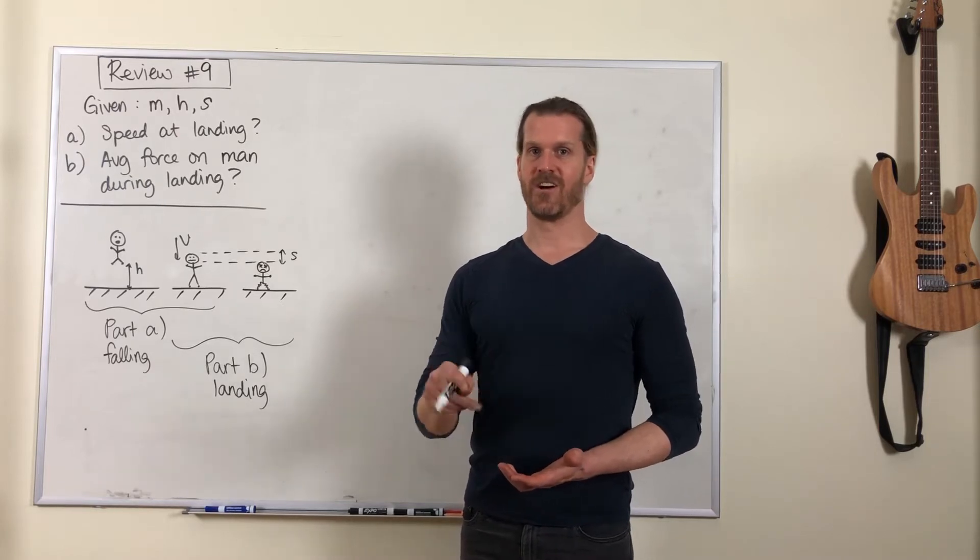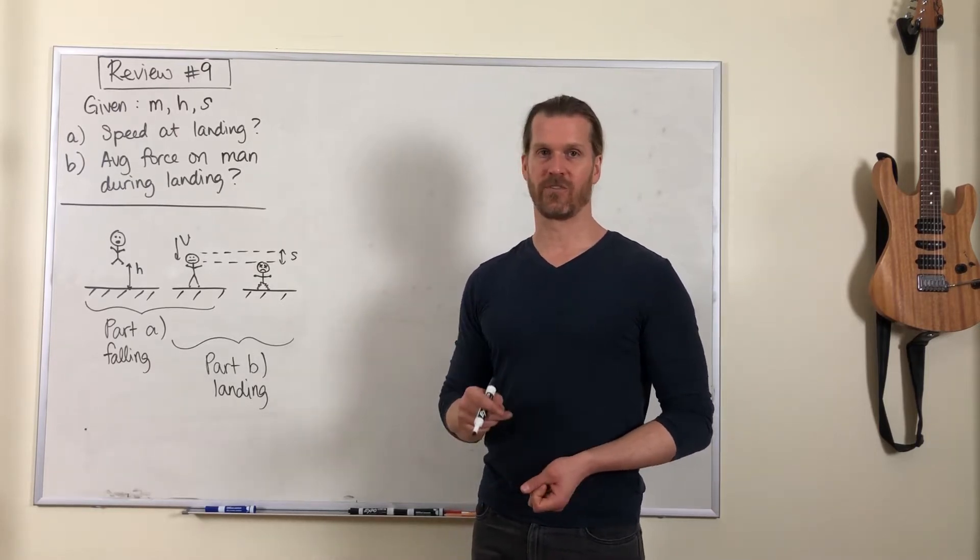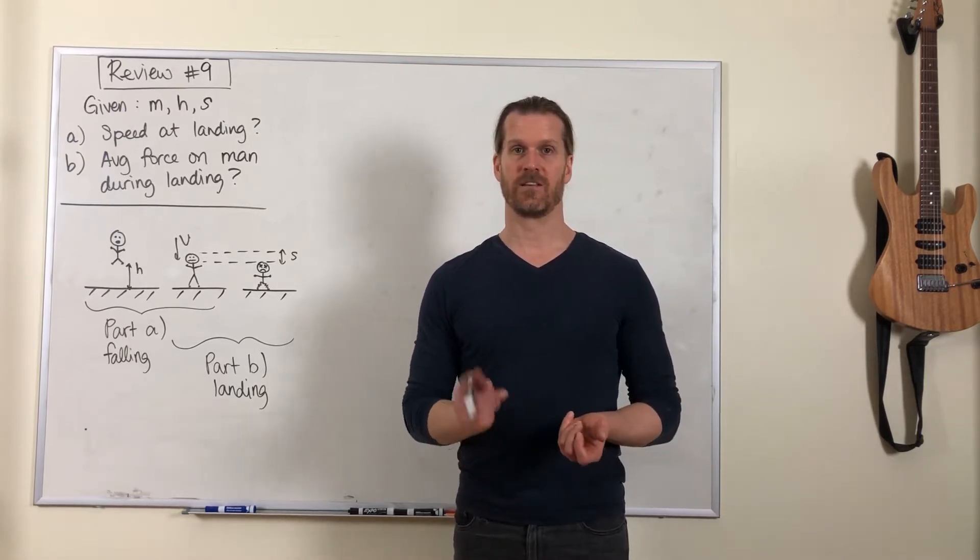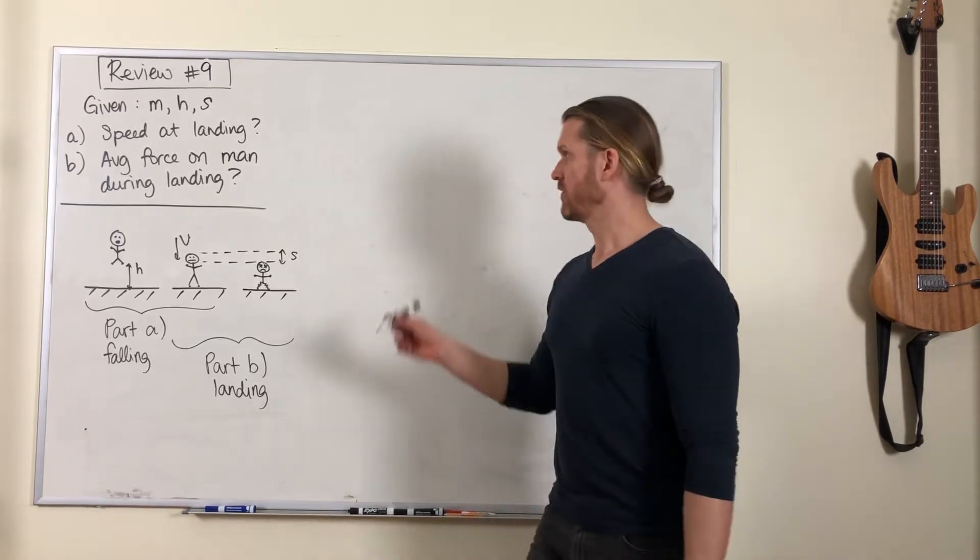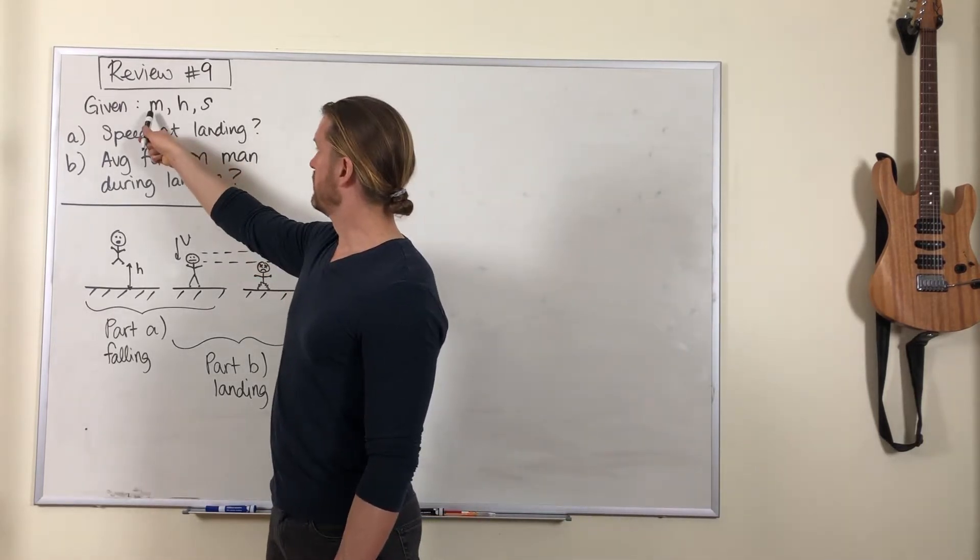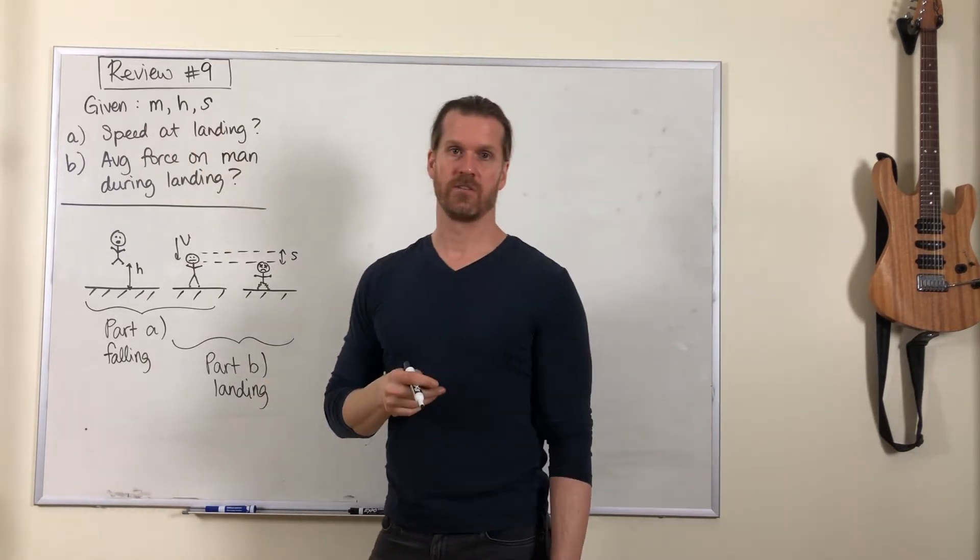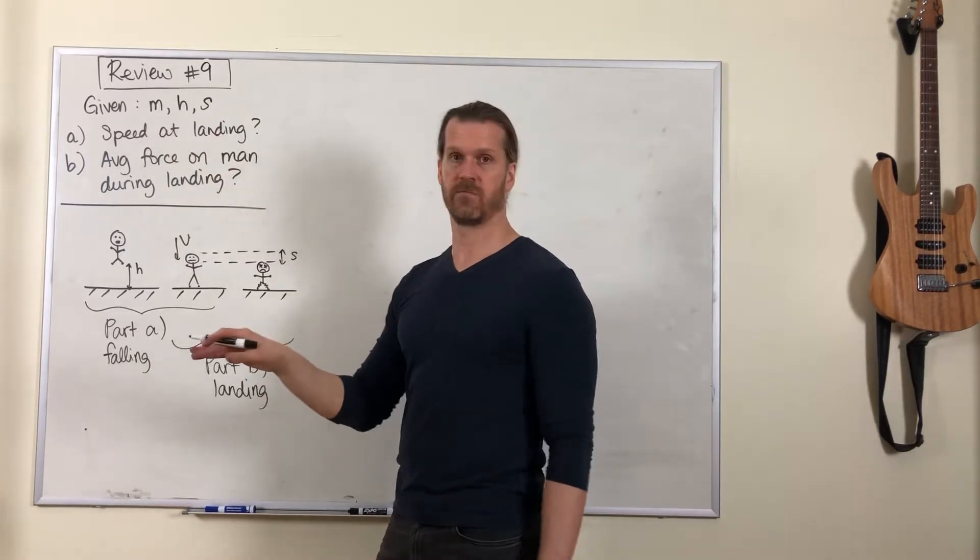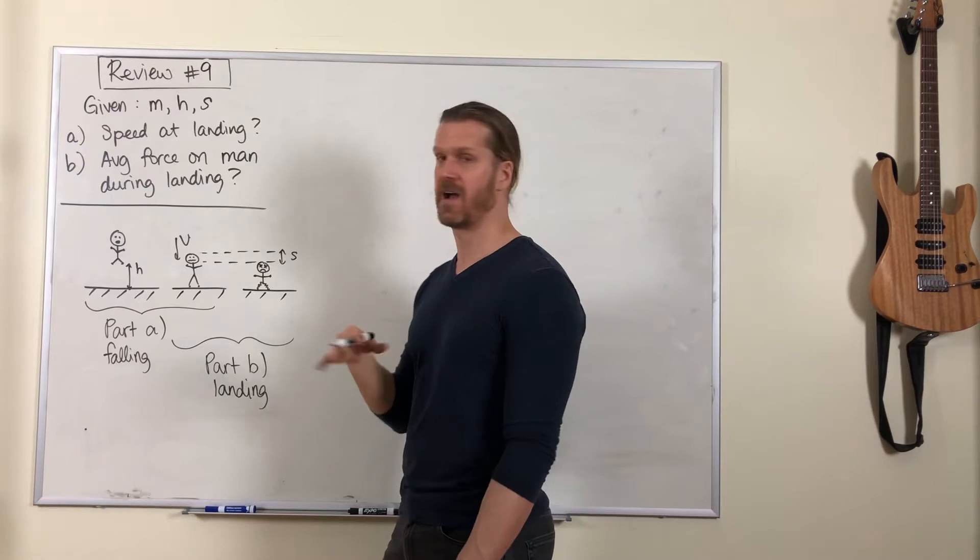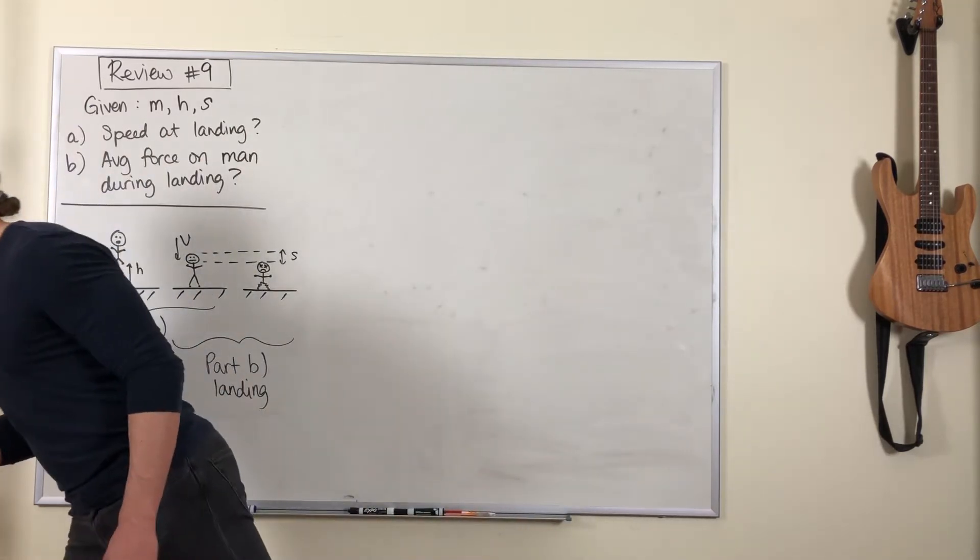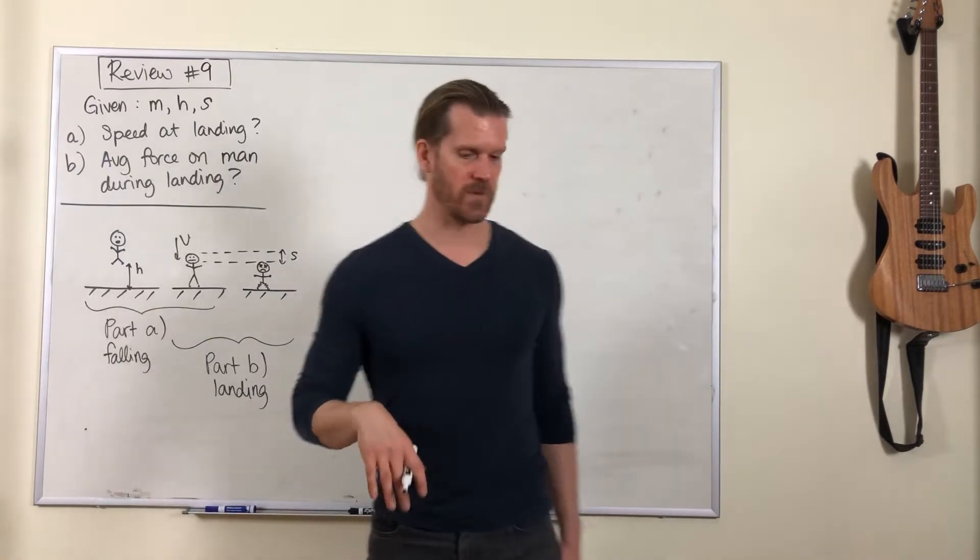That's not a good idea because the force on his legs is going to be so great that he's going to break some bones. Here's the situation: we're given a man of mass m who jumps from some initial height h. As we'll see, this height doesn't have to be too high to cause a lot of injury. In my example it's 1.2 meters, which is about this high.